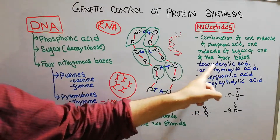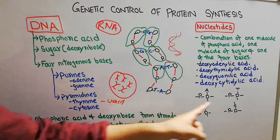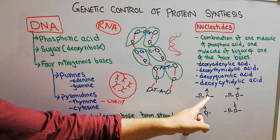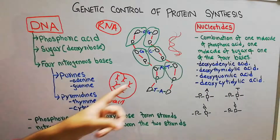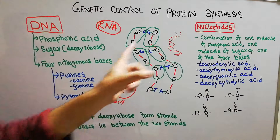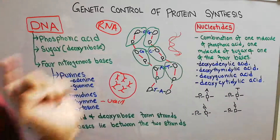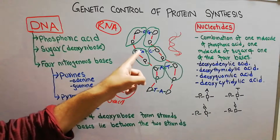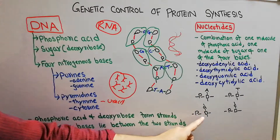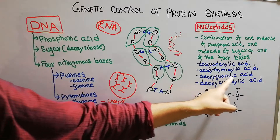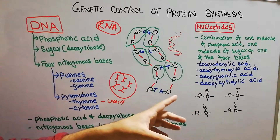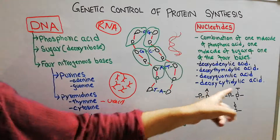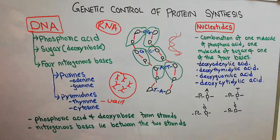If adenine is attached with the sugar and phosphoric acid, the nucleotide is known as deoxyadenylic acid. If thymine is attached with the sugar, the nucleotide is known as deoxythymidylic acid. If guanine is attached with the sugar and phosphoric acid, it is known as deoxyguanylic acid. And if cytosine is attached with the sugar and phosphoric acid, the nucleotide is known as deoxycytidylic acid.